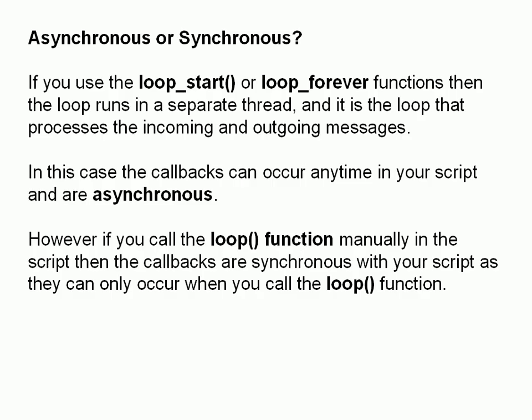Just one more thing to consider: synchronous versus asynchronous. If you use the print statement in the callbacks and in the main program, and if you're also using the loop_start and loop_forever functions, you'll find that the messages become jumbled. This is because loop_start and loop_forever run in a separate thread, which makes them basically independent of the main program. Since you've got no control over when the callbacks are going to be triggered, they can be triggered at any time. If you're using the loop function manually, then because it's part of your main program, you've got control of when you call it, and so the callbacks will effectively be synchronous.